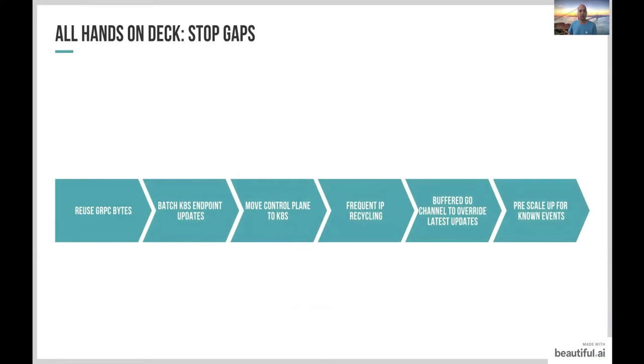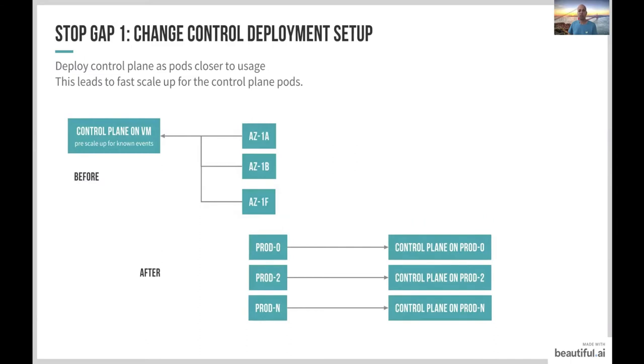While all these problems were happening, we spun into action. One of the first approaches was to move the control plane infrastructure to Kubernetes, so that it could scale quickly and proportionally with other services. We could also scale up or pre-scale the existing legacy control plane before known events. Control plane pods were deployed in the Kubernetes clusters, so they could scale proportionally.